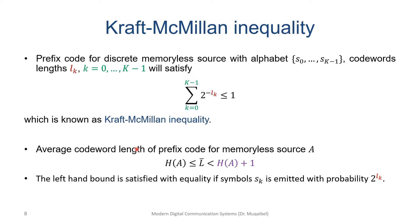An important result: the average codeword length of prefix codes for a memoryless source is bounded between H(A) and H(A)+1 — the entropy and entropy plus one. The left-hand side becomes an equality only if the probabilities are negative powers of two — i.e., 2^{-l_k} — such as 1/2, 1/4, 1/8, and so on. So the only way to achieve the entropy bound exactly is when probabilities follow those specific values.